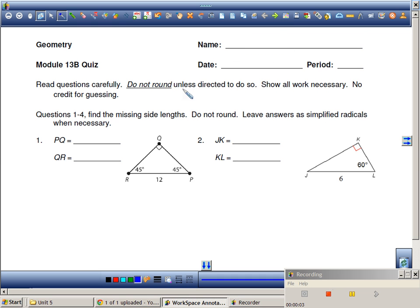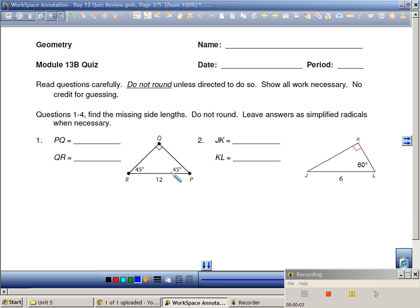Okay, so let's go over the quiz. I'm not sure if this is Form A or B, but I'm just going to do one form and then you guys can work together because they're very similar. So it says for questions 1 through 4, find the missing side length. Do not round. Leave answers as simplified radicals when necessary. So trying to find PQ.